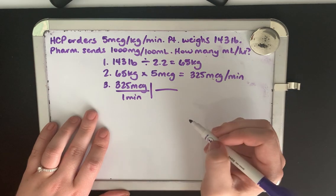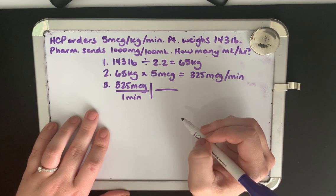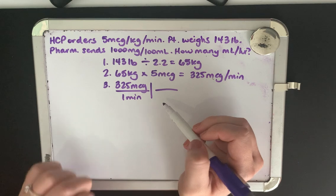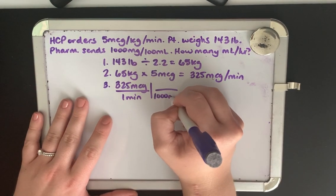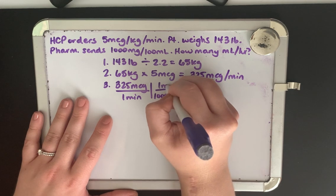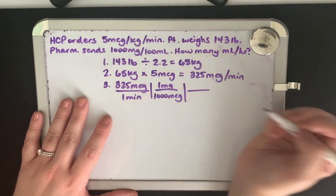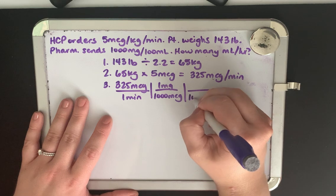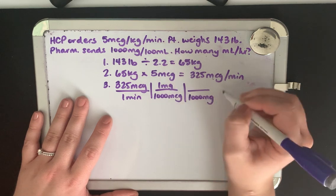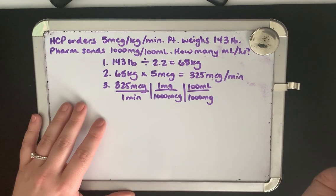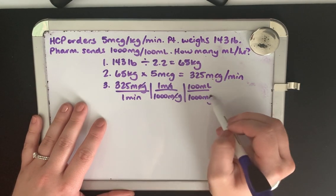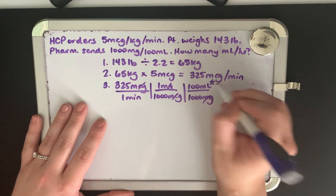Our medication comes in 1000 milligrams. So we need to convert from micrograms to milligrams. There's 1000 micrograms in one milligram. Our medication comes in 1000 milligrams per 100 mLs. So let's take a pause there. Our micrograms cancel out, our milligrams cancel out, and we're already at mLs.